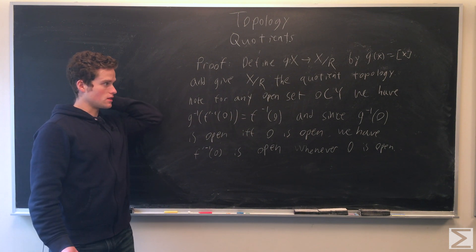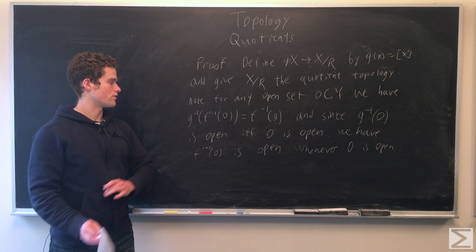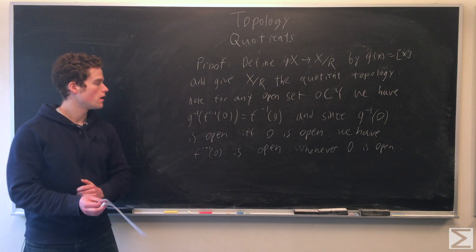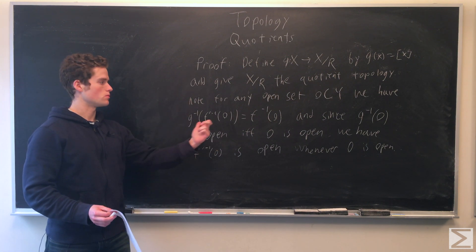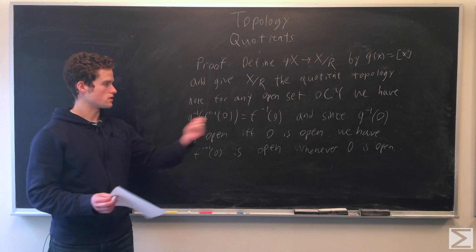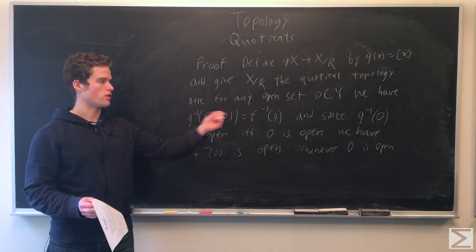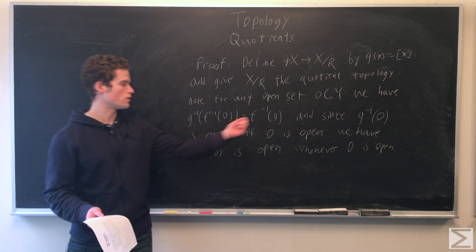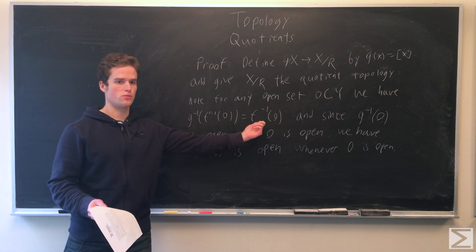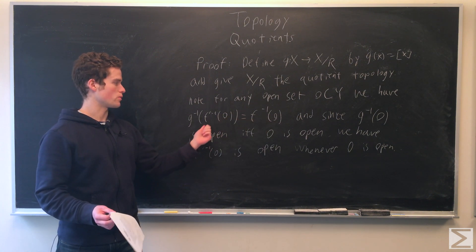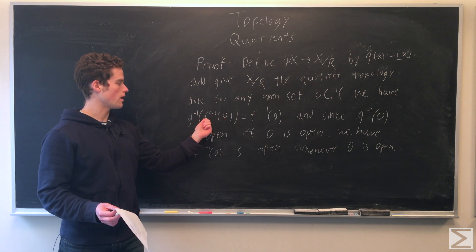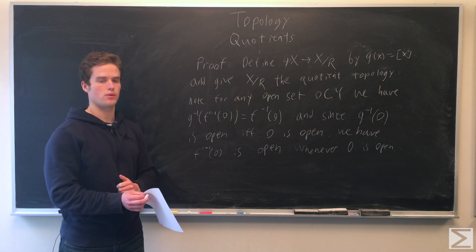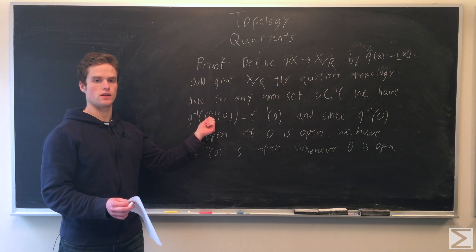We note that for any open set O in Y, g-inverse of f-prime-inverse of O is equal to f-inverse of O. You can draw a commuting diagram to show this. Since we gave X/R the quotient topology, g-inverse of O is open if and only if O is open. So if O is an open set, then f-inverse of O is an open set, which means f-prime-inverse of O must be open. And so that shows our map f-prime must be a continuous map.